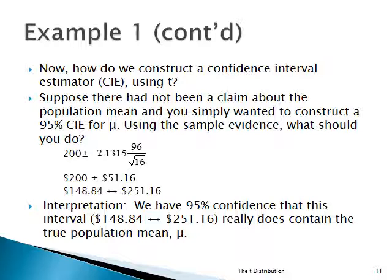Here's what you do. You take the formula, starting with x-bar, which is 200. That's the sample mean. Plus or minus 2.1315 times the standard error of the mean, 96 over the square root of 16. So 2.1315 times 96 over the square root of 16 gives you a margin of sampling error of $51.16. So we have 200 plus 51.16, and 200 minus 51.16.